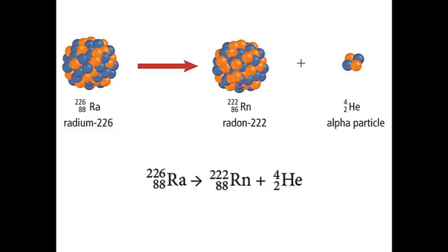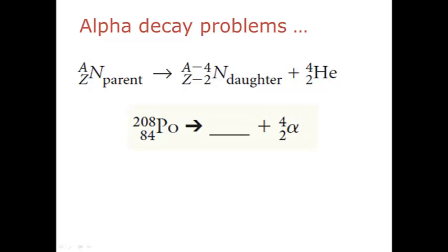The general equation of alpha decay shows that the parent nuclei of an atom undergoing alpha decay will lose two electrons and two protons. In other words, the mass number of the daughter nuclei will decrease by four, and the atomic number will decrease by two. Since mass number and atomic number must be conserved for all radioactive decay, not just alpha decay problems, problem solving is simply a matter of addition or subtraction.